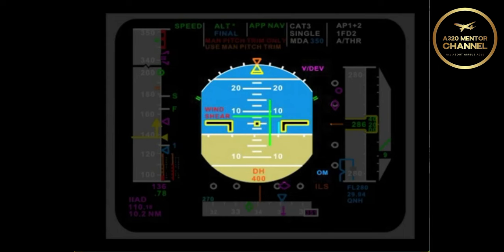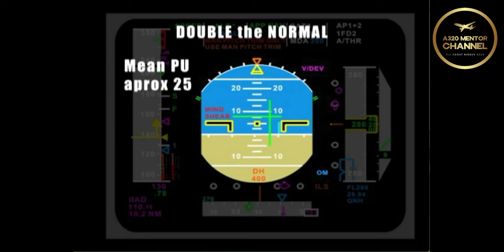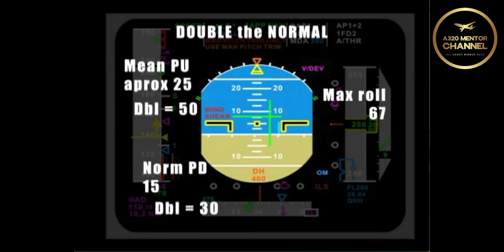What kind of parameters would the aircraft have to exceed to be forced into abnormal attitude law? Well, the easy way to remember is just double the maximum parameters of bank and pitch we have already discussed. For example, pitch up limits are 30, 25, and 20. 25 is the mean. Double that, and you have 50. For pitch down, it is 15. Double is 30. Maximum roll is 67. Double that is approximately 125.